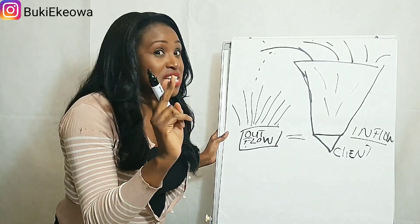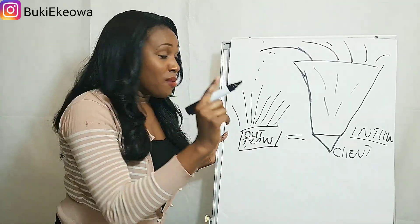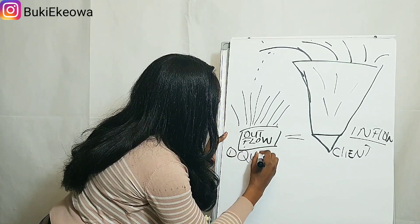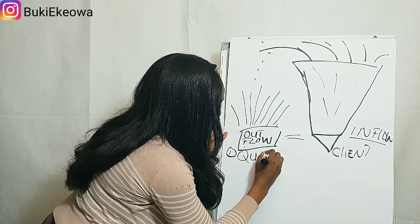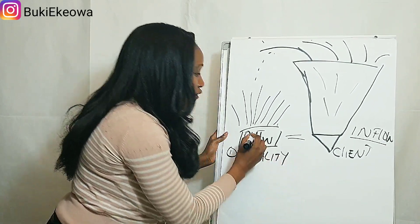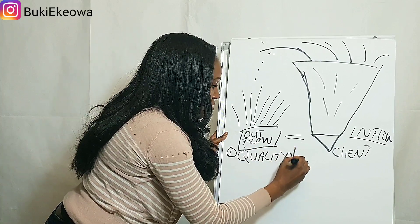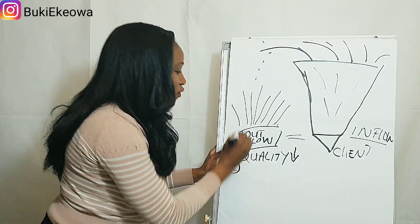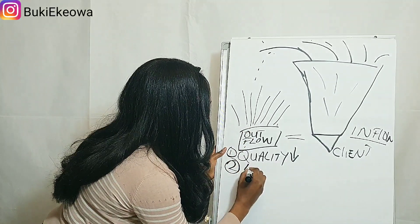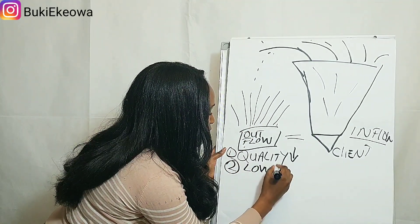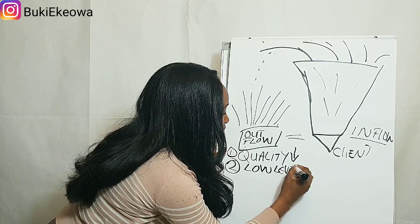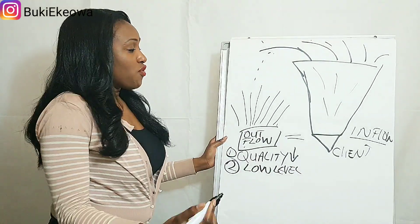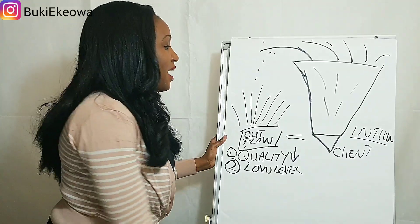If you're not getting enough clients coming through your door, there are only two reasons why: number one, the quality of your outflow is poor, or number two, the level of your outflow is too low — meaning there's not enough activity. Or both.